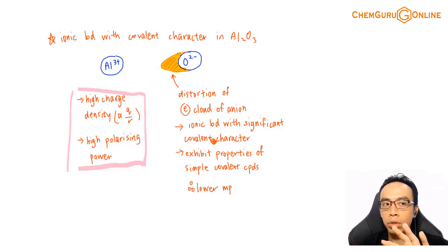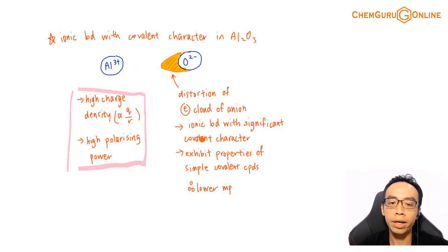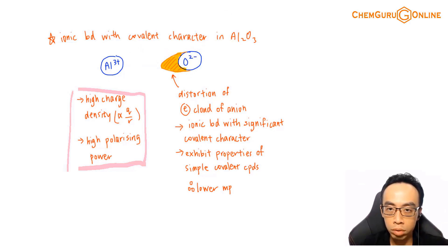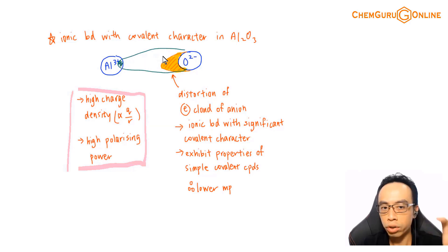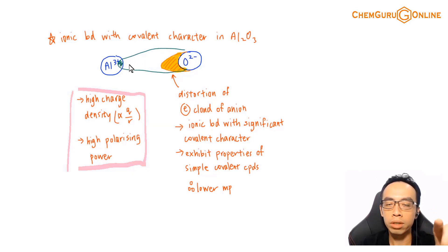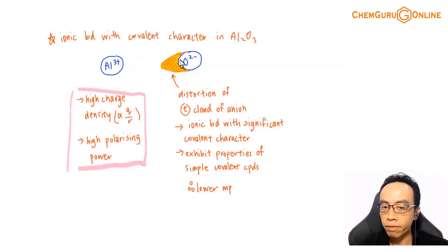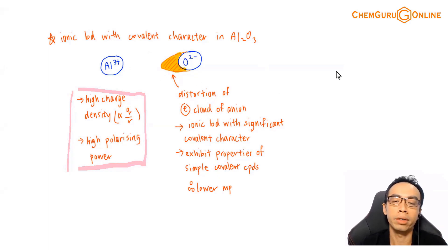A simpler way to explain it: if you pull enough — if you distort enough — eventually there will be an orbital overlap between Al³⁺ and O²⁻. Once there's an orbital overlap, this is officially counted as a covalent bond. So the greater the pulling, eventually it just becomes a covalent bond, and the covalent character comes in.